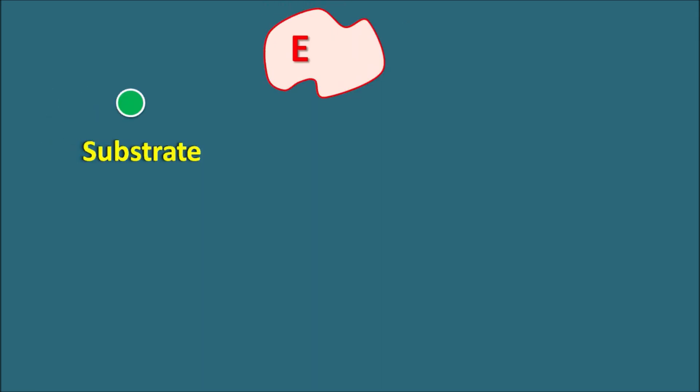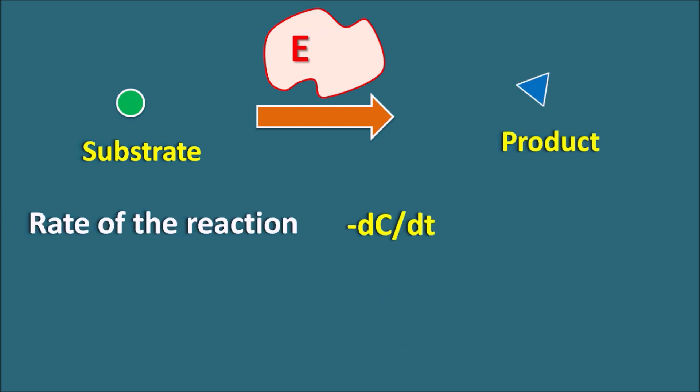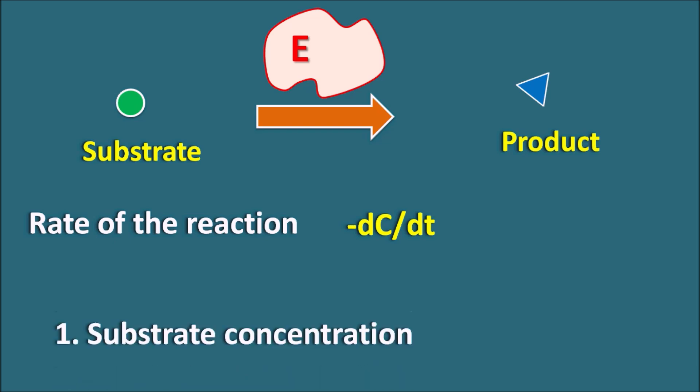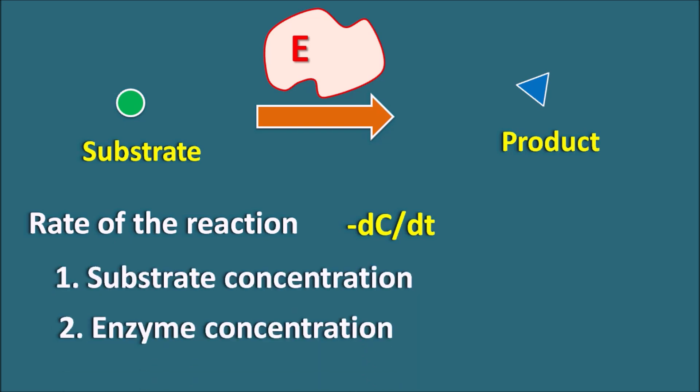Here the substrate is going to interact with the enzyme and they are going to form a product. The rate of the reaction can be indicated by minus dC/dt, where C indicates the concentration of the substrate. As the reaction proceeds, the substrate concentration decreases and product concentration increases. The velocity of the reaction is indicated by the negative sign. This rate of reaction depends on many factors, among them two important factors are substrate concentration as well as enzyme concentration.